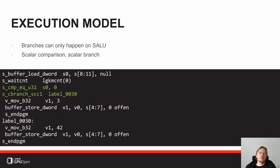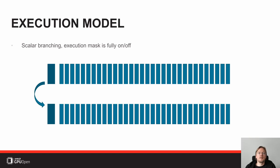If it's a scalar branch it's very simple: it will execute a scalar comparison, execute a scalar branch, and jump across code without fiddling with the execution mask. It will just jump because all lanes are active and we execute a jump to the new location based on the branch decision. Problem solved.